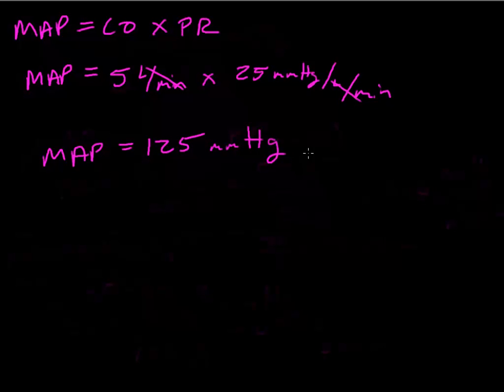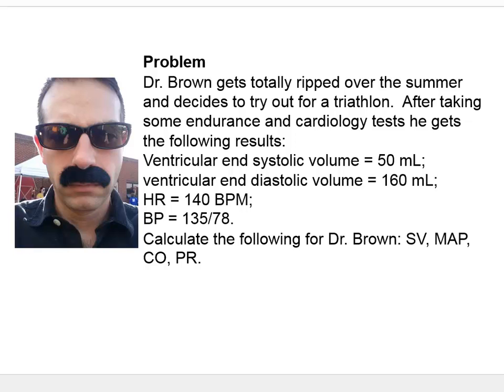That's it for problem set two. Now on to the really challenging one — and I like this one because it's all about me. In this hypothetical situation, I get totally ripped and decide to try out for a triathlon. I do testing in the exercise physiology lab, and we're asked to calculate my stroke volume, mean arterial pressure, cardiac output, and peripheral resistance. Let's take these one at a time.